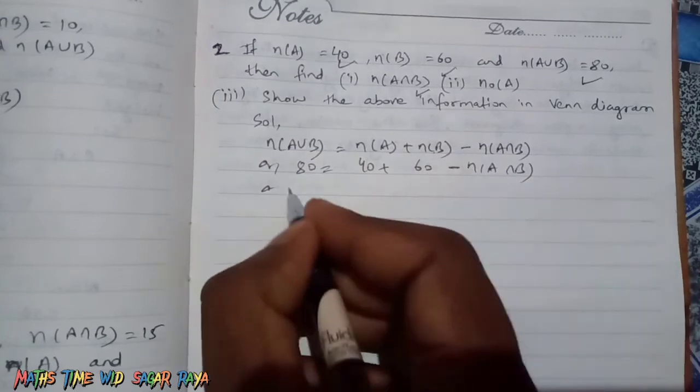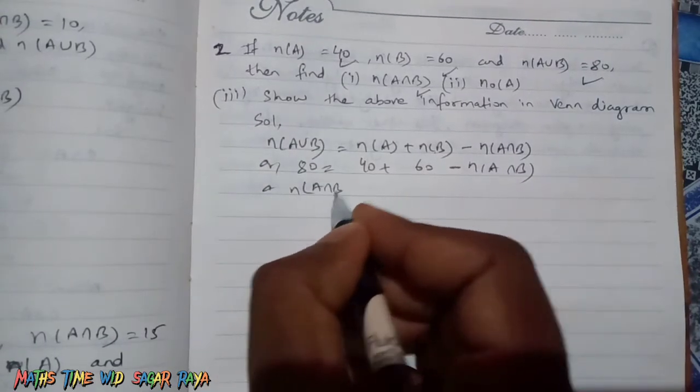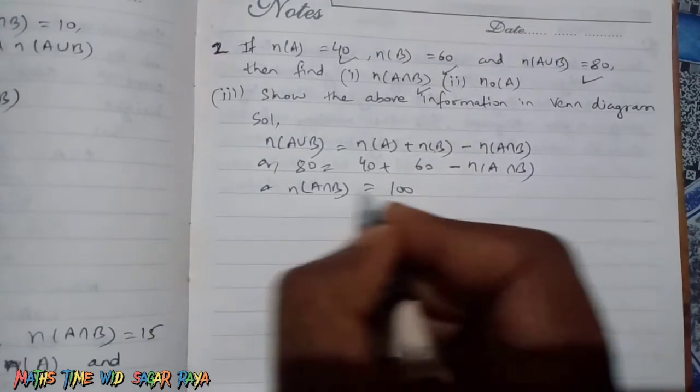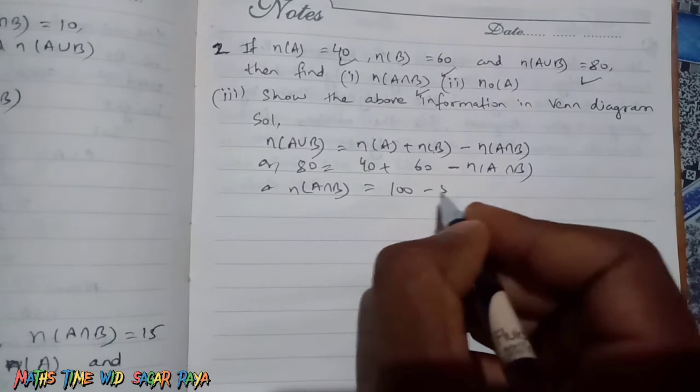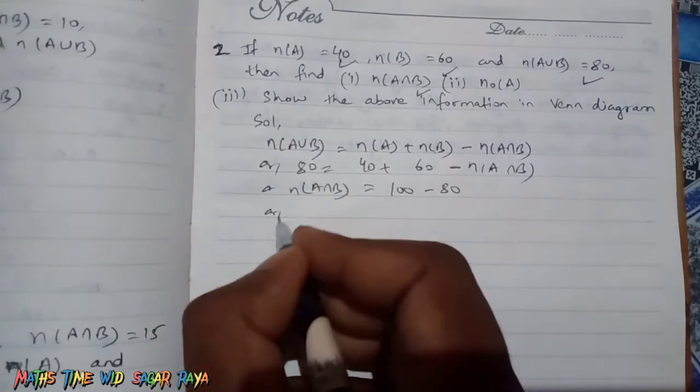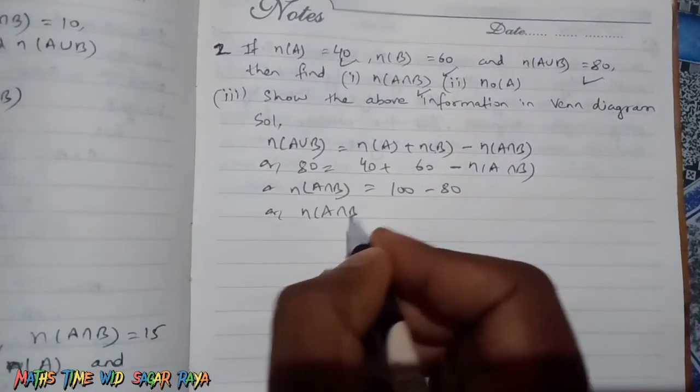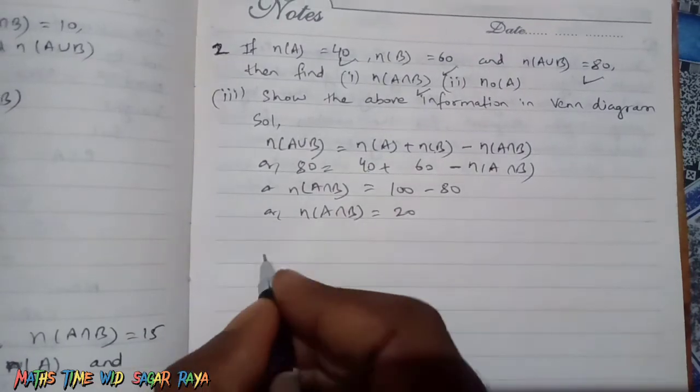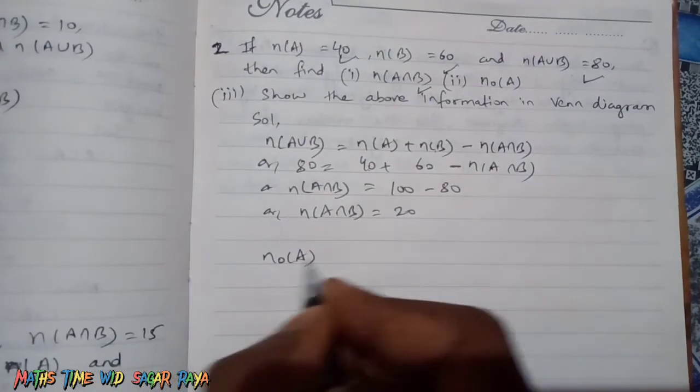n(A∩B) is in minus form, so let's bring it to the left hand side where it becomes positive. 40 plus 60 equals 100. This 80 goes to the right hand side and becomes minus 80, giving us 20. So n(A∩B) = 20. Similarly, we can find n(only A) also.